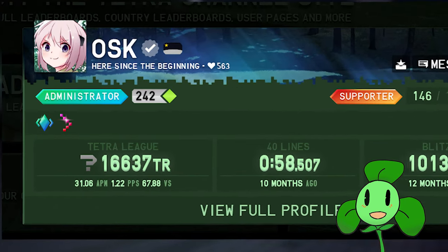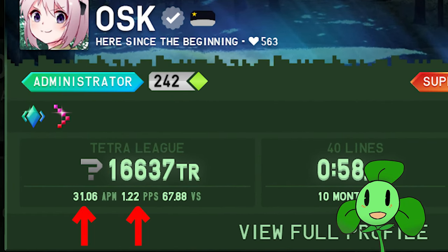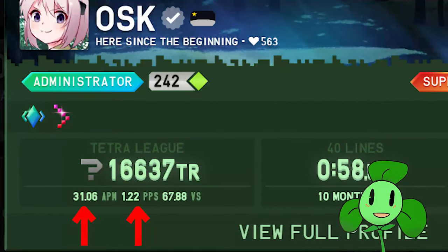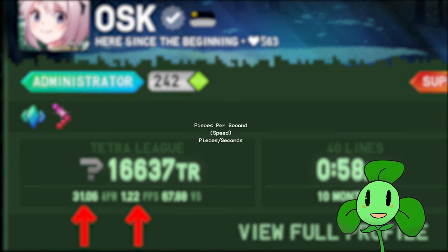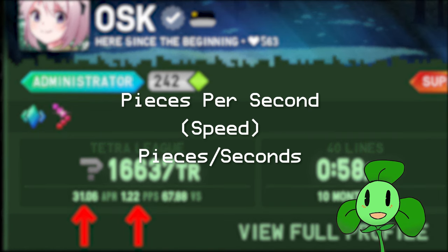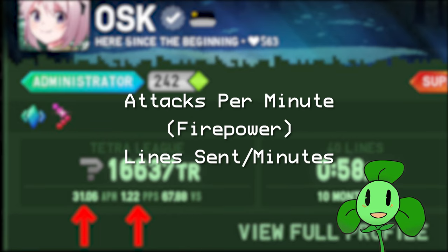If you look at your stats, you see these two stats, APM and PPS. What do those mean? PPS means your pieces per second, or how fast you place your pieces. Your APM is your attacks per minute, or how many lines you're sending. APM is a pretty good measure of skill, since the more APM, the more attack your opponent will send.